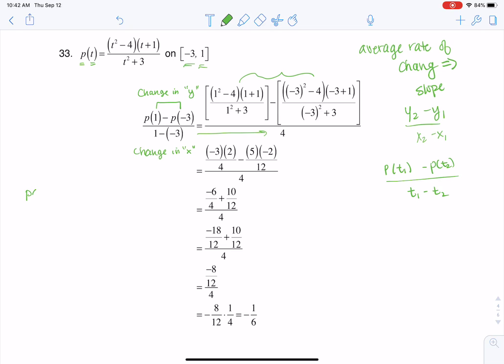So if I wanted to do P of 1, it would be 1 squared minus 4 times 1 plus 1 over 1 squared plus 3. And that's essentially what I have written right here, but that's me plugging in 1 wherever I see a T value, and then we're computing that number.